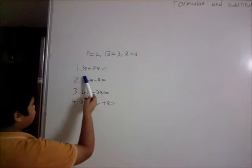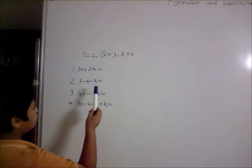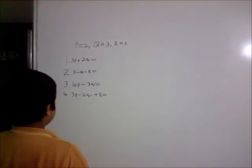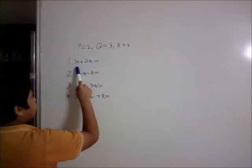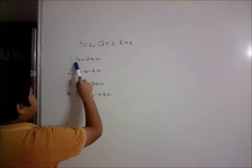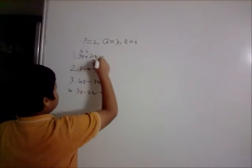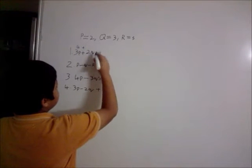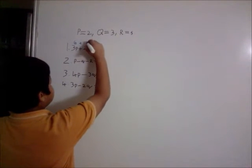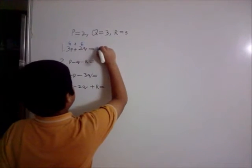First question, 3P plus 2Q is equal to what? For example, 3P, so P is equal to 2 and 3 times 2 is 6. So it is equal to 6 plus 2Q, which is 6 because 2 times 3 is 6, which is equal to 12.